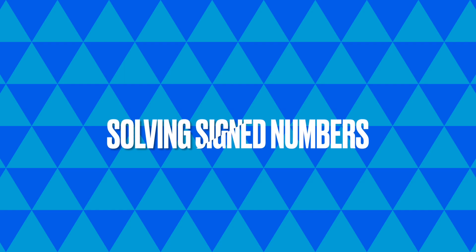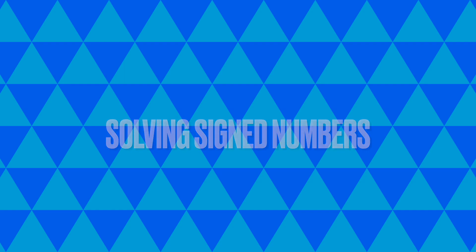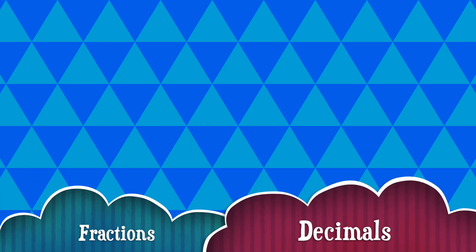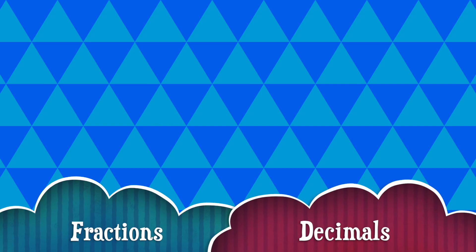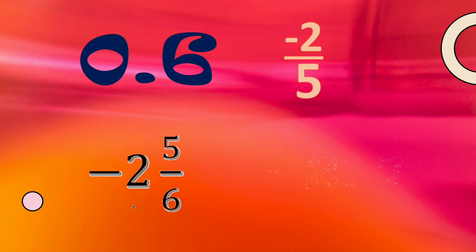This video will help discuss how to solve signed numbers. Signed numbers include fractions and decimals which are negative or positive, like 0.6, negative 2 fifths, negative 2 and 5 sixths, and negative 2.7.